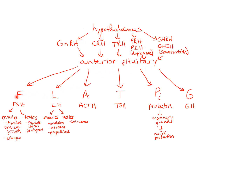Down here are all of the anterior pituitary hormones. The way you remember them is with the mnemonic FLAT PIG. The F is FSH, or follicle-stimulating hormone. L is LH, or luteinizing hormone. A is ACTH, or adrenocorticotropic hormone. T is TSH, or thyroid-stimulating hormone. P is prolactin. And G is growth hormone.